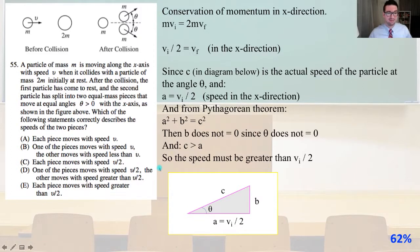Number 55. A particle of mass m is moving along the x axis with speed v when it collides with a particle of mass 2m initially at rest. After the collision, the first particle has come to rest. The second particle splits into two equal mass pieces that move at equal angles theta greater than zero with the x axis.